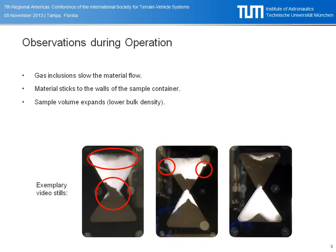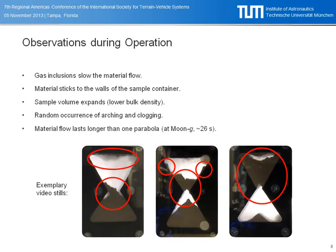What you can see here is that the lower funnel can be filled beyond the actual target volume. We also had random occurrences of arching and clogging. In some cases the material flow lasted longer than one entire parabola, which is about 26 seconds — so that would be a really slow material flow.